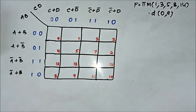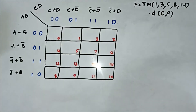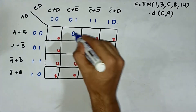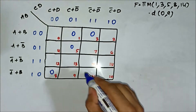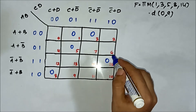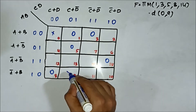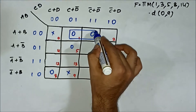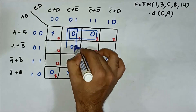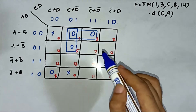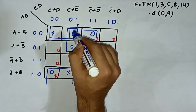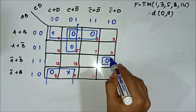This is another question. We have the POS max term values given and the don't care values. We will map them first. Max term values are 1, 3, 5, 8, 14, and then 0 and 9 are the don't care values. Now we will form the groups. First, two cells form a pair. Then another two cells form another pair. Then cells 8, 9, 0, 1 form a quad. And cell 14 forms a single cell group. All the zero-marked cells have been covered — that is the first priority. We are not concerned about the x-marked cells.